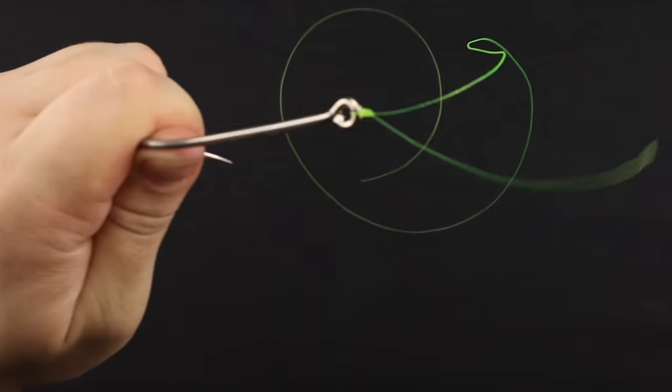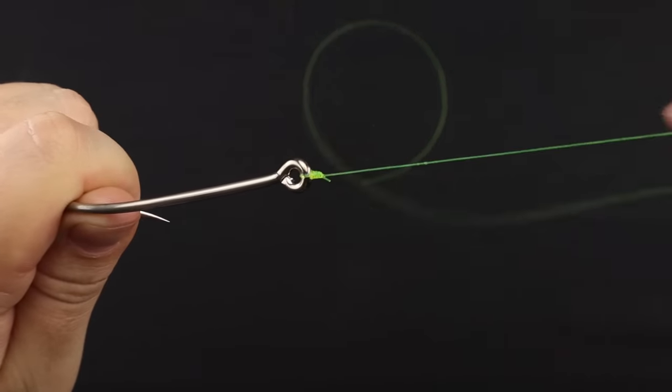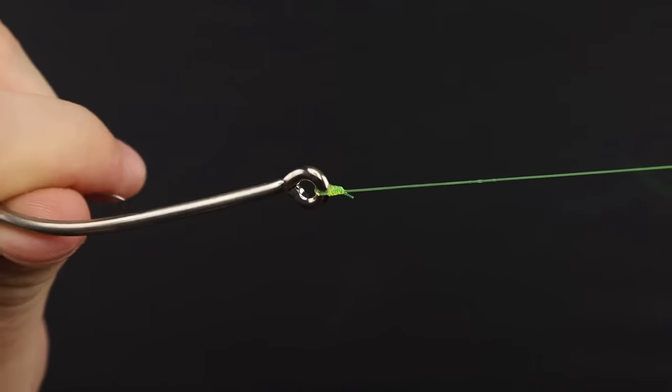Now you have your tag end here to cut off. What you're left with is the completed uni knot.